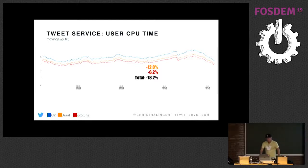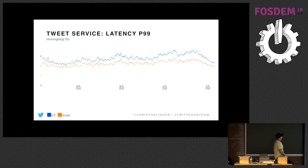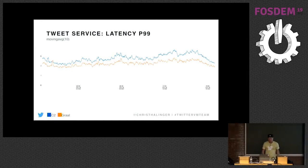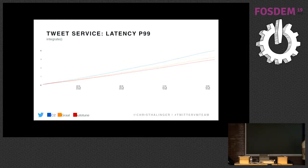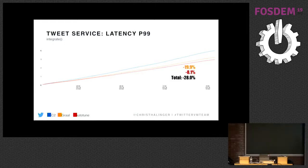For P99 latency for tweets, Graal is certainly better than C2. When integrating over GC times across 24 hours, we can reduce P99 latencies by 19% just by using Graal, and then another 8% by using the Autotune parameters — so 28% total means you get your tweet roughly 20% faster.